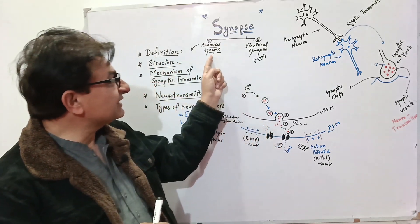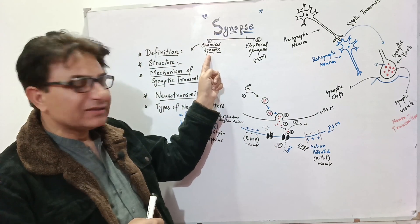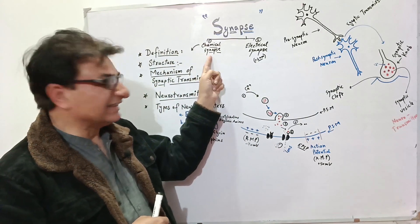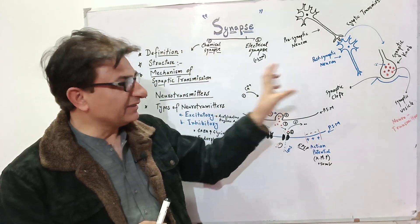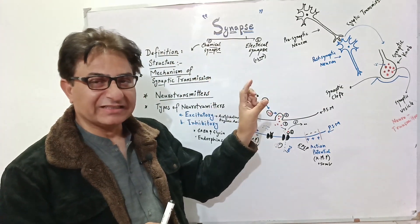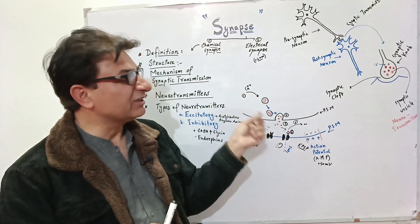That is why these kinds of synapses are called chemical synapses. The structure you have studied is the structure of a chemical synapse, which involves pre-synaptic and post-synaptic neurons.